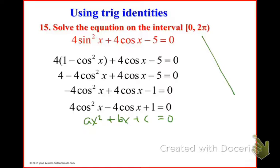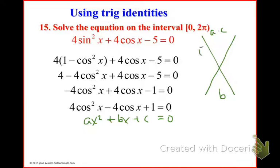Now we have it in the form ax squared plus bx plus c equal to 0, and we're going to treat it just like a quadratic equation. We're going to use the x method. Just think of the cosines as x terms. On top of the x, we multiply a times c; at the bottom we put our b. On either side we find the factors that multiply to the top and add to the bottom.